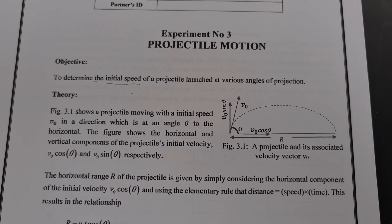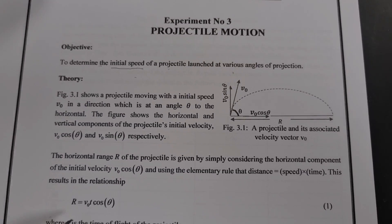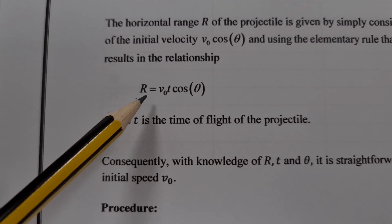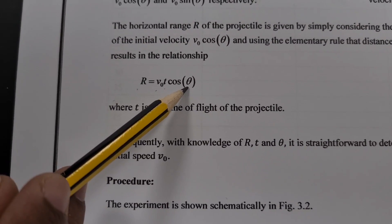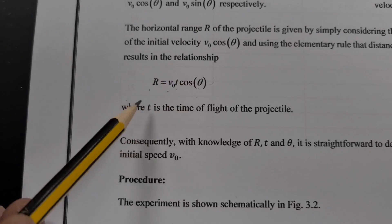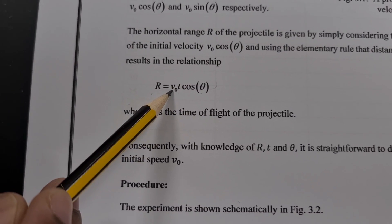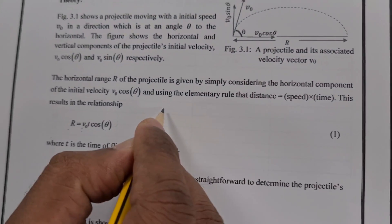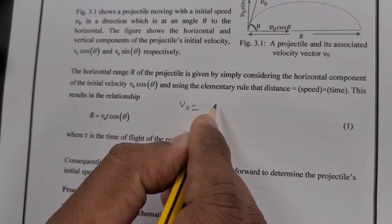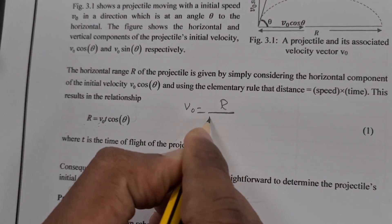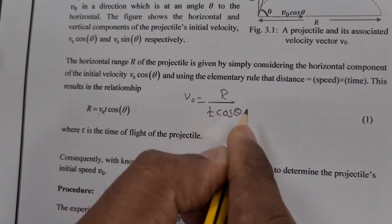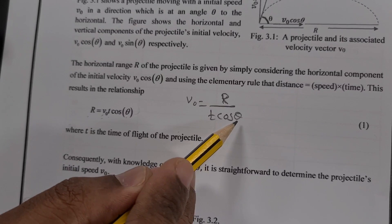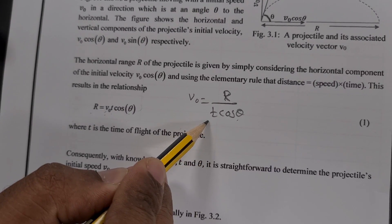For this experiment, we are going to use the main equation: r = v₀·t·cosθ, from which we can find the value of v₀. Rearranging gives v₀ = r / (t·cosθ), where r is the range, θ is the angle, and t is the time.